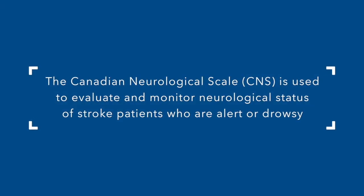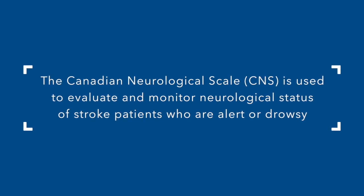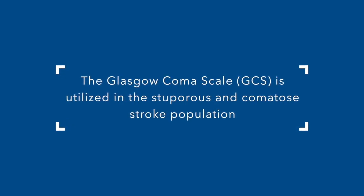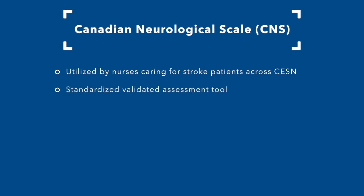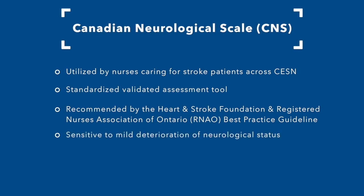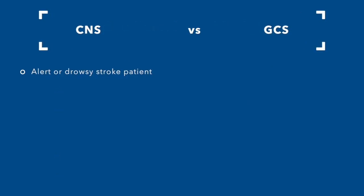The Canadian Neurological Scale is used to evaluate and monitor neurological status of stroke patients who are alert or drowsy. The Glasgow Coma Scale is utilized in the stuporous and comatose stroke population, utilized by nurses caring for stroke patients across the CESN. It is a standardized, validated assessment tool recommended by the Heart and Stroke Foundation and Registered Nurses Association of Ontario Best Practice Guideline. It is sensitive to mild deterioration of neurological status, takes approximately five minutes to complete, does not assess cerebellar or brain stem infarcts, and is used for alert or drowsy stroke patients.